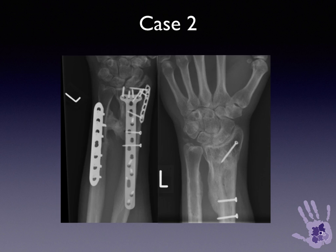In Case 2, a complex distal fracture of the radius with a fracture at the same level of the ulna, the synostosis had matured by about one year. The synostosis was taken down and an interpositional adipofascial perforator flap was used, again maintaining a full range of forearm rotation.